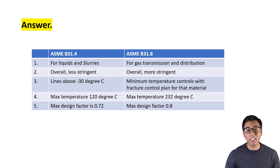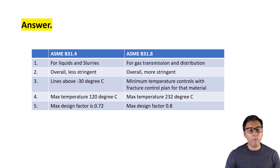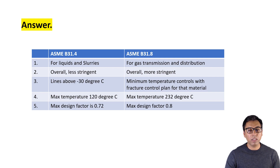The fifth and last point is design factor. The difference is that B31.4 can go to a maximum of 0.72, while in B31.8 we can go up to 0.80.